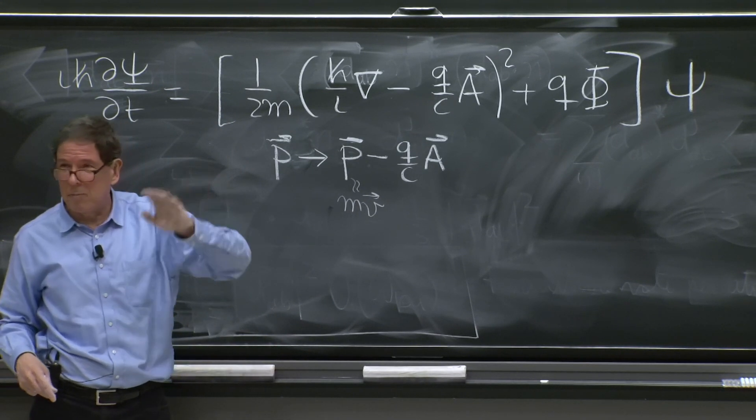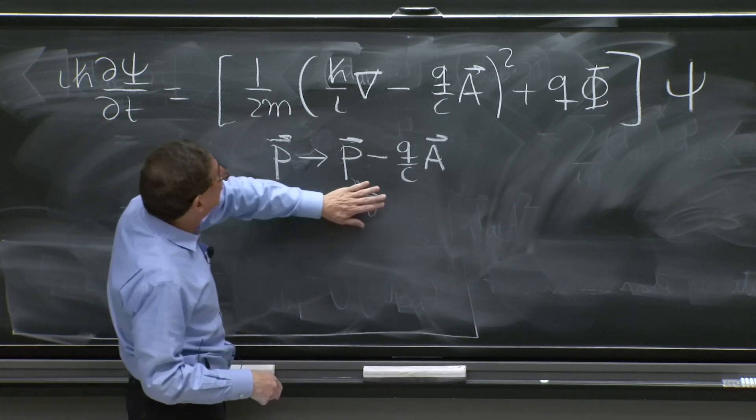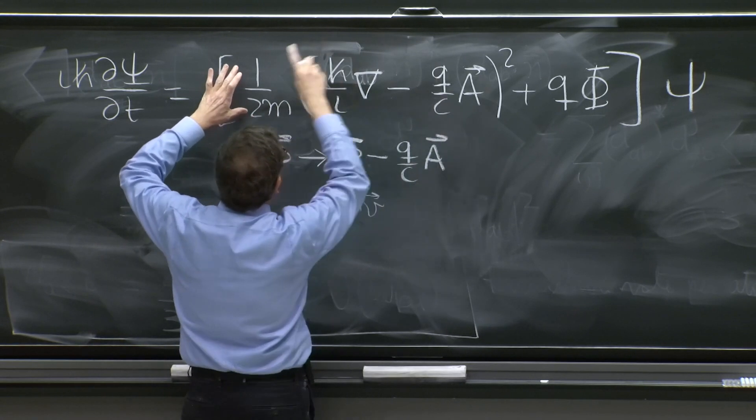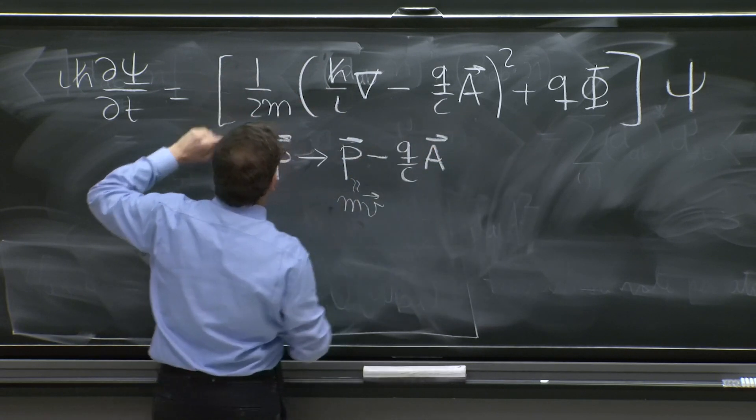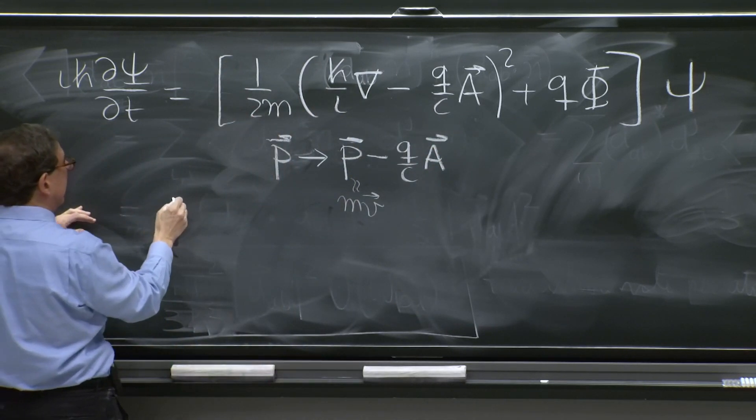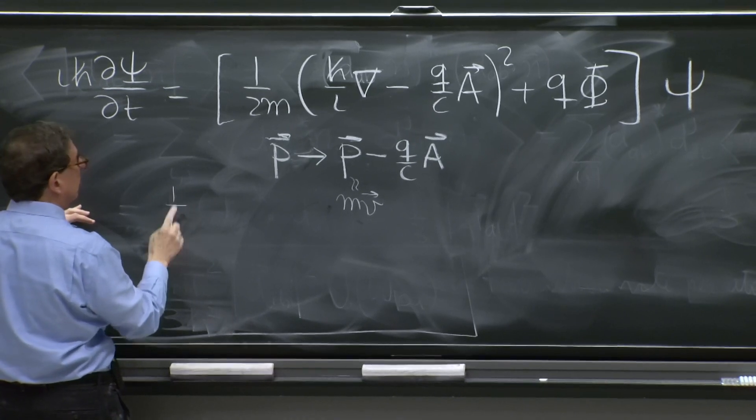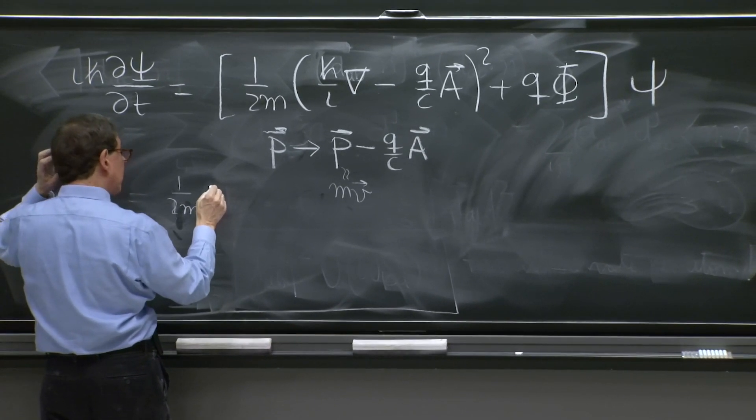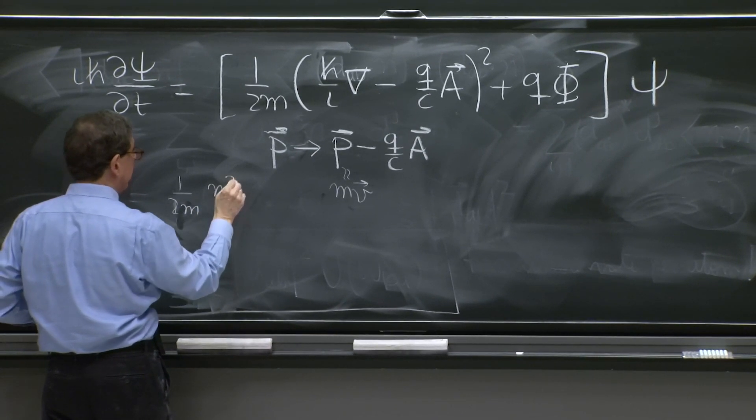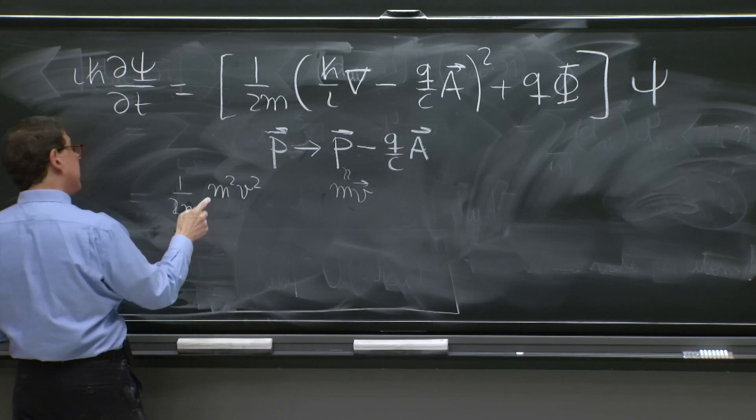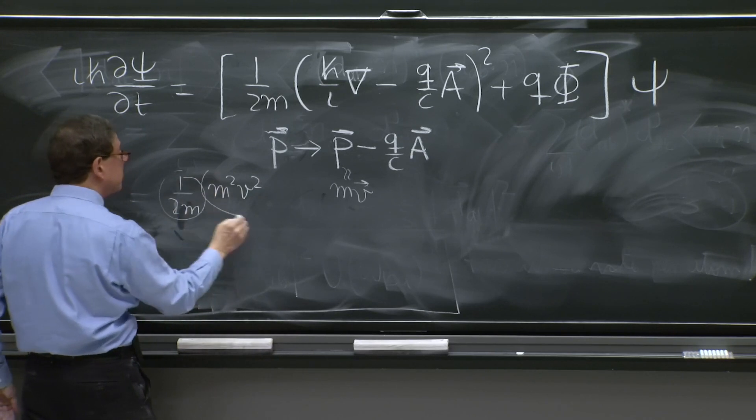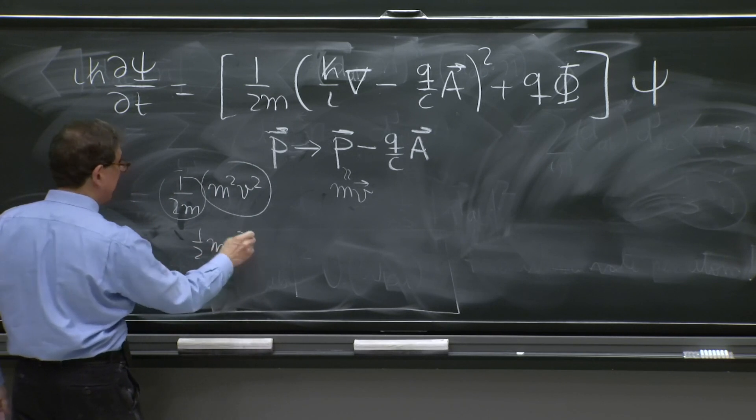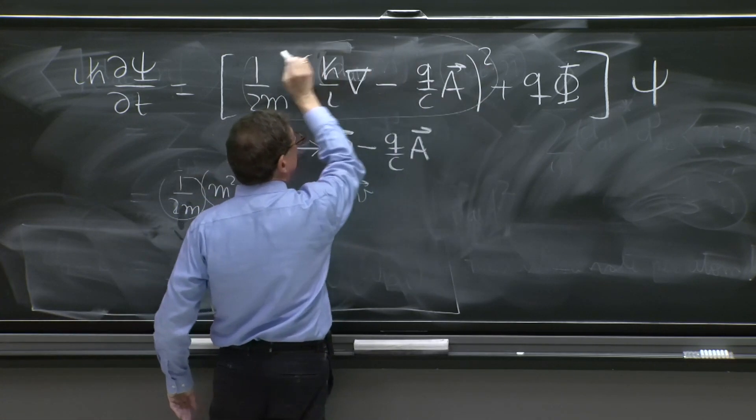We will see that from Heisenberg's equation of motion, but intuitively, when you have here, this is the energy of a particle, kinetic energy and potential energy. The kinetic energy, 1 over 2m times m²v². That's p². So 1 over 2m, m²v² is 1 half mv². That's the kinetic energy, and that should come from here.